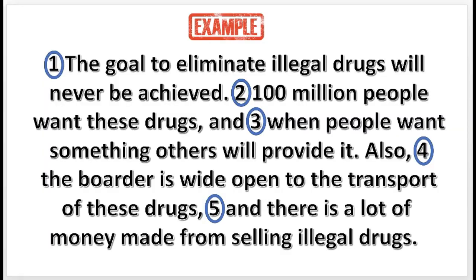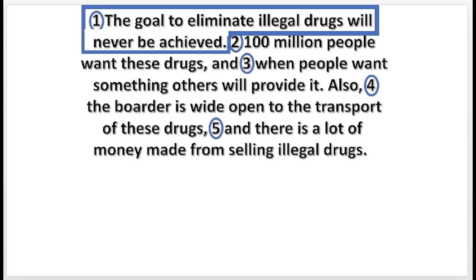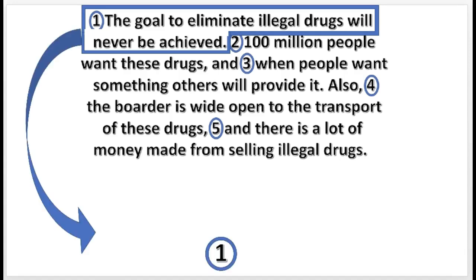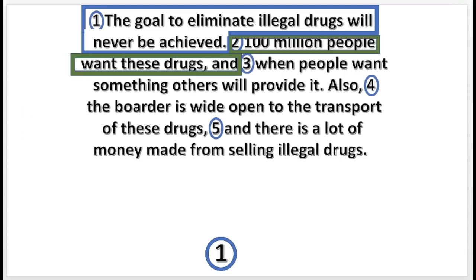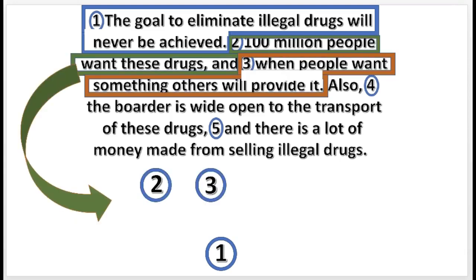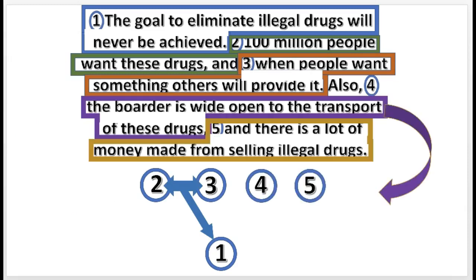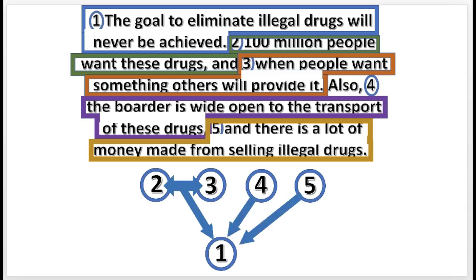Here's an example. As we examine the argument, we see that statement 1 is the conclusion. As we draw the diagram, we see that statement 2 and statement 3 support the conclusion conjointly. Statement 4 and statement 5 support the conclusion independently.